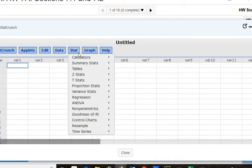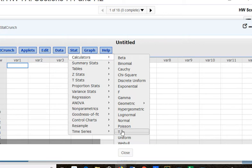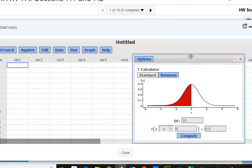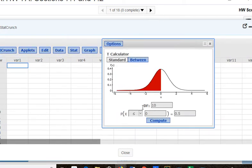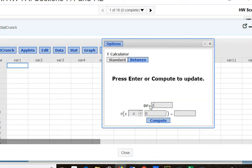And I'm going to go to Stat, Calculators, and down to T, because I'm talking about T tables. And you can see what I have here. It asks me for my degrees of freedom, which are 24.